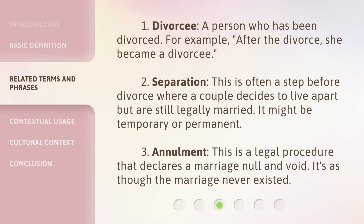1. Divorcee: a person who has been divorced. For example, after the divorce, she became a divorcee. 2. Separation: this is often a step before divorce where a couple decides to live apart but are still legally married. It might be temporary or permanent. 3. Annulment: a legal procedure that declares a marriage null and void — it's as though the marriage never existed.